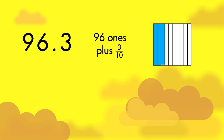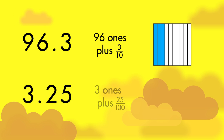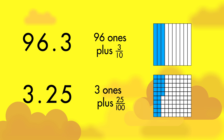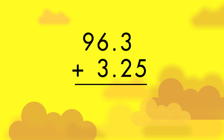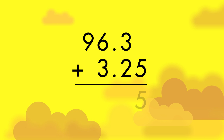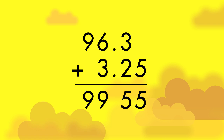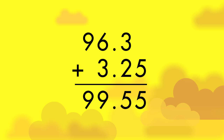When you add and subtract numbers with decimals, think of working with whole numbers as well as parts of wholes. Saturn's atmosphere contains 96 and 3 tenths parts hydrogen and 3 and 25 hundredths parts helium. Line up the addends carefully according to place value. Add digits from right to left. Don't forget to include a decimal point in the sum. The total of the gases is 99 and 55 hundredths parts.